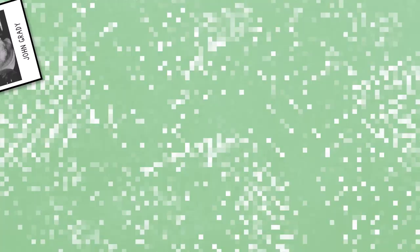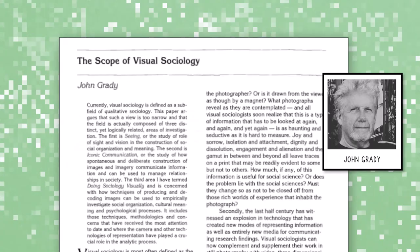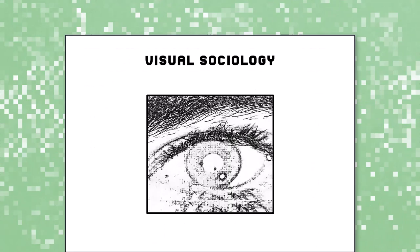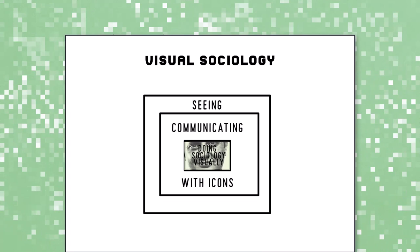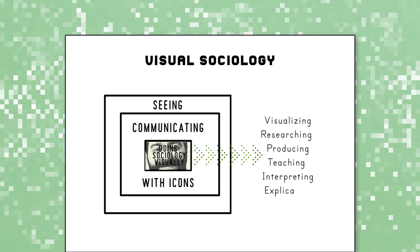John Grady casts visual sociology as the study of three things. Seeing — that is, how sight and vision contribute to social organization and meaning. Iconic communication, which is how images communicate information and manage relationships in society. And doing sociology visually, which includes visualizing, researching, producing, teaching, interpreting, and explicating images.